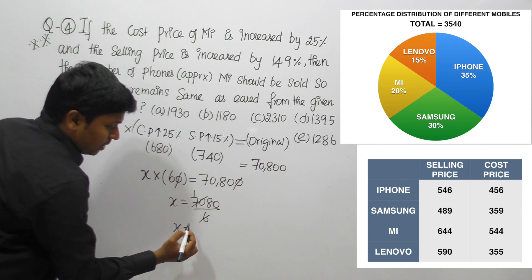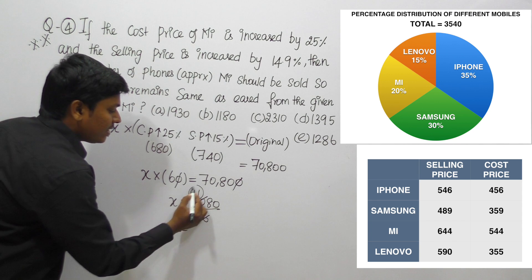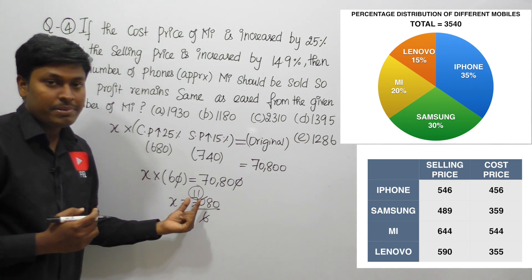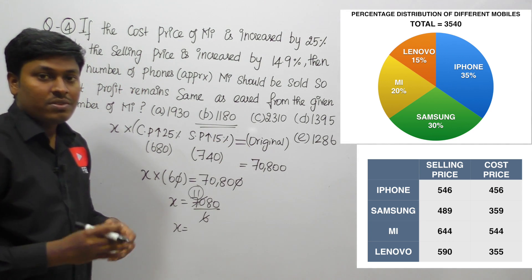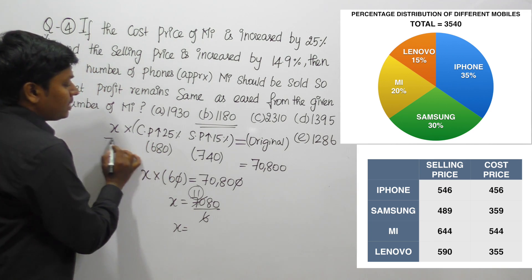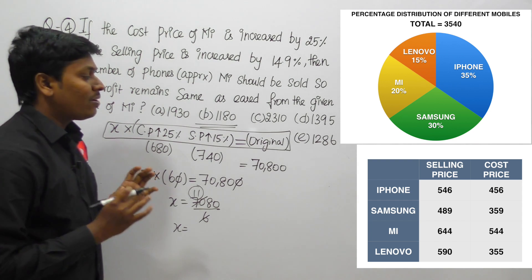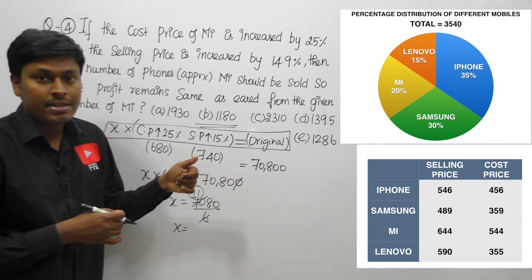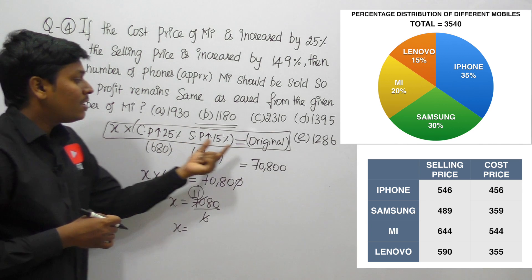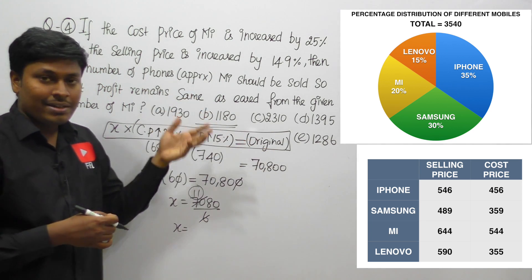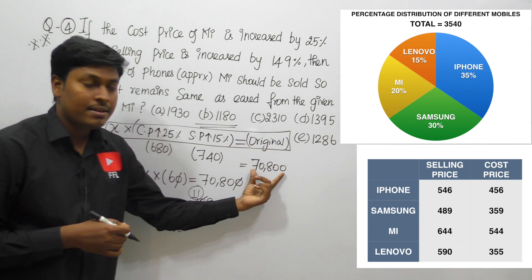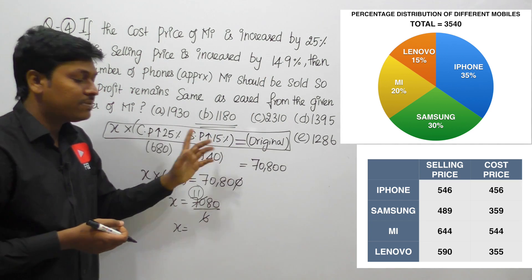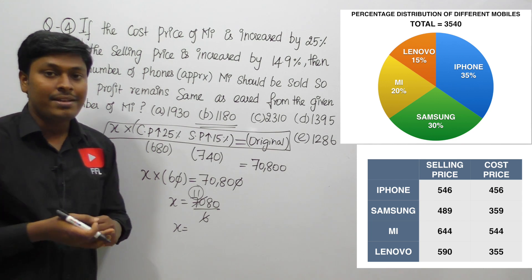So x = 7080 / 6. Working this out: the first two digits are 11, and looking at the options — 1180 starts with 11. So option B (1180) is the answer. In summary: the condition was cost price increased by 25%, selling price increased by 15% (approximating 14.9%), and we needed the profit to equal the original 70,800. We found that 1180 Mi mobiles should be sold.